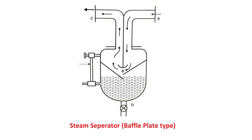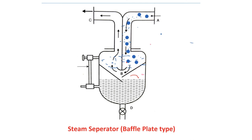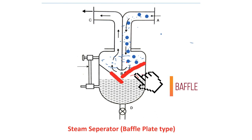In this video we will discuss the working principle of the baffle type or impact type steam separator. Here you can see the schematic diagram. Steam enters through flange A and flows downward. In its passage, it strikes the baffle B, and as a result it gets deflected.